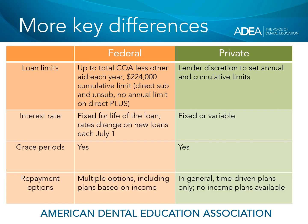Some additional key differences: in terms of loan limits with federal loans, you can borrow up to the full cost of attendance, less other financial aid, each year if you need to. Just because you can borrow the full cost of attendance every year doesn't mean that you have to, but you can with a combination of direct unsubsidized and direct plus, minus other financial aid. There is a cumulative limit on federal student borrowing of $224,000. For private loans, it's going to be lender discretion to set the annual and cumulative limits, so be sure to check with them about those limits.